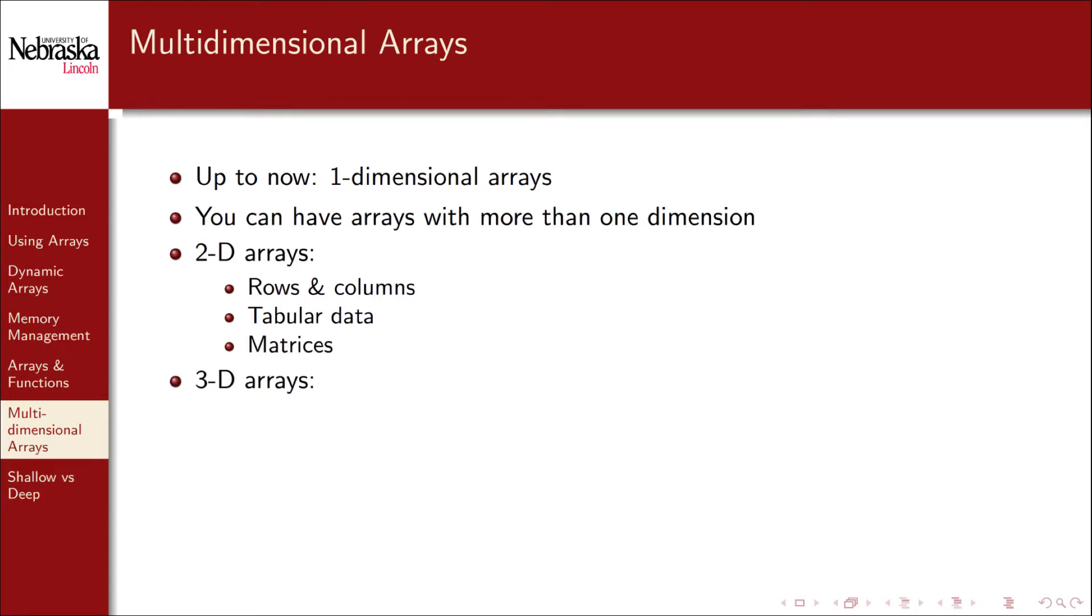You can also have three-dimensional arrays, which have rows, columns, and sometimes referred to as lanes for the third dimension, or three dimensions like a cube, or three-dimensional Euclidean space. Of course you can continue to generalize this in any dimension that you want.